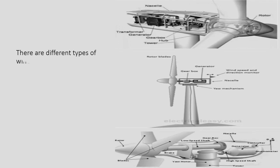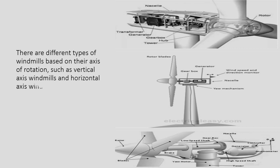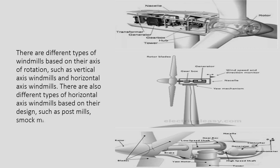Such as vertical axis windmills and horizontal axis windmills. There are also different types of horizontal axis windmills based on their design, such as post mills, smock mills, tower mills, and fan mills.